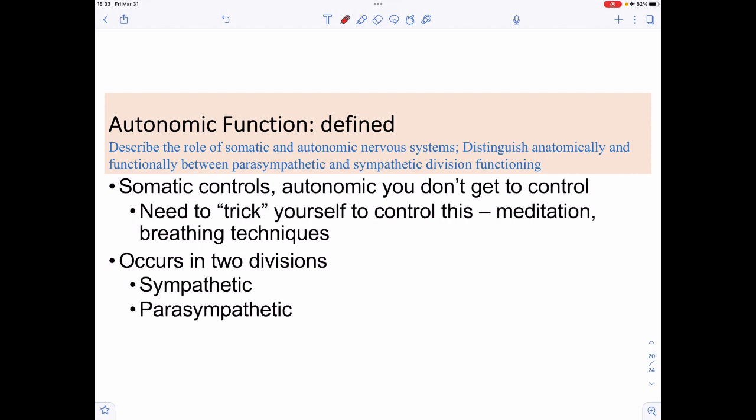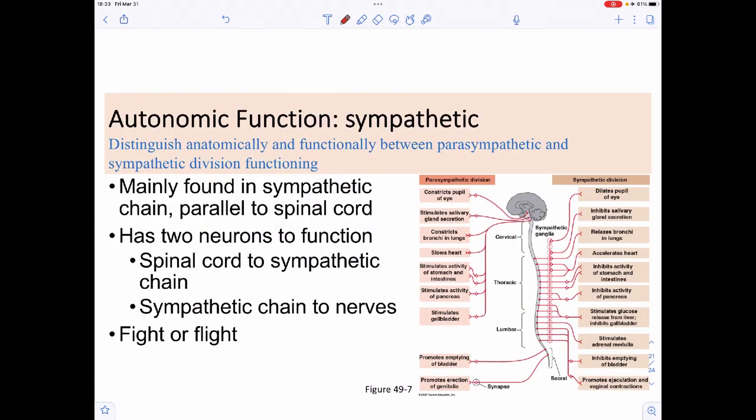The autonomic nervous system, on the other hand, deals with automatic non-conscious control. You can trick yourself into thinking that you can control things—like meditation can help or breathing using various breathing techniques—but you don't get much say as to what's happening. The autonomic nervous system is broken up into two components: the sympathetic and the parasympathetic. The sympathetic division of the autonomic nervous system is primarily found on these little side chains that we call the sympathetic ganglia or the sympathetic chains. What you actually have is your spinal cord and then we actually have these little side chains that are right next to the spinal cord and they connect. It turns out in order to have functioning, there are two neurons that are always required for the autonomic nervous system to do its thing. It's going to be a neuron that goes from the spinal cord to the sympathetic chain and then from the sympathetic chain moving on out.